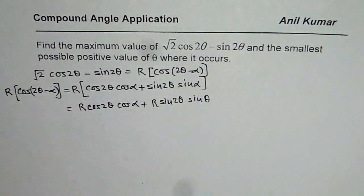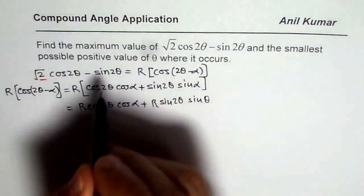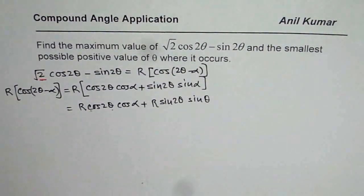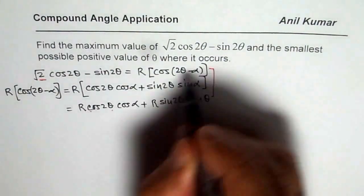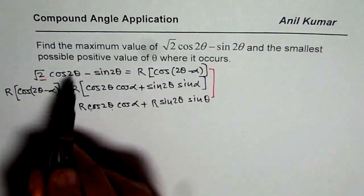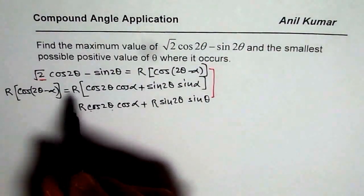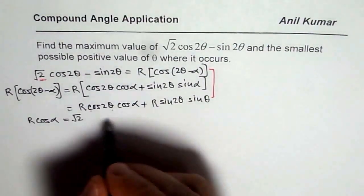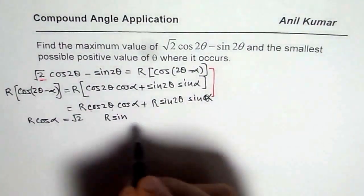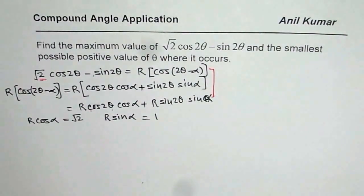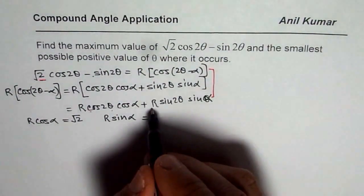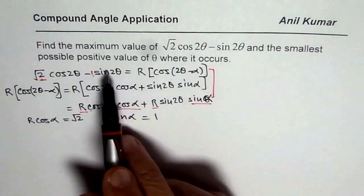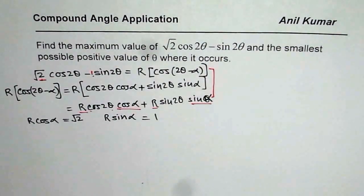Now if we compare this expansion with our original expression √2·cos(2θ) − sin(2θ), we match coefficients of cos(2θ) and sin(2θ). Comparing the two sides, we can write r·cos(α) = √2 and r·sin(α) = 1, where 1 is the coefficient of sin(2θ) in the original expression.